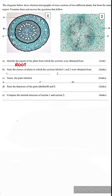I believe we have answered the first part, which is the root. Moving on to part B: state the classes of plants to which the sections labeled 1 and 2 were obtained from. One is a monocot root, so this belongs to class Monocotyledoni. Remember, when you are writing the name of this class, always start with a capital letter and it's never 'class monocot'—it's Monocotyledoni. For the second one, being a dicot, that is class Dicotyledoni.